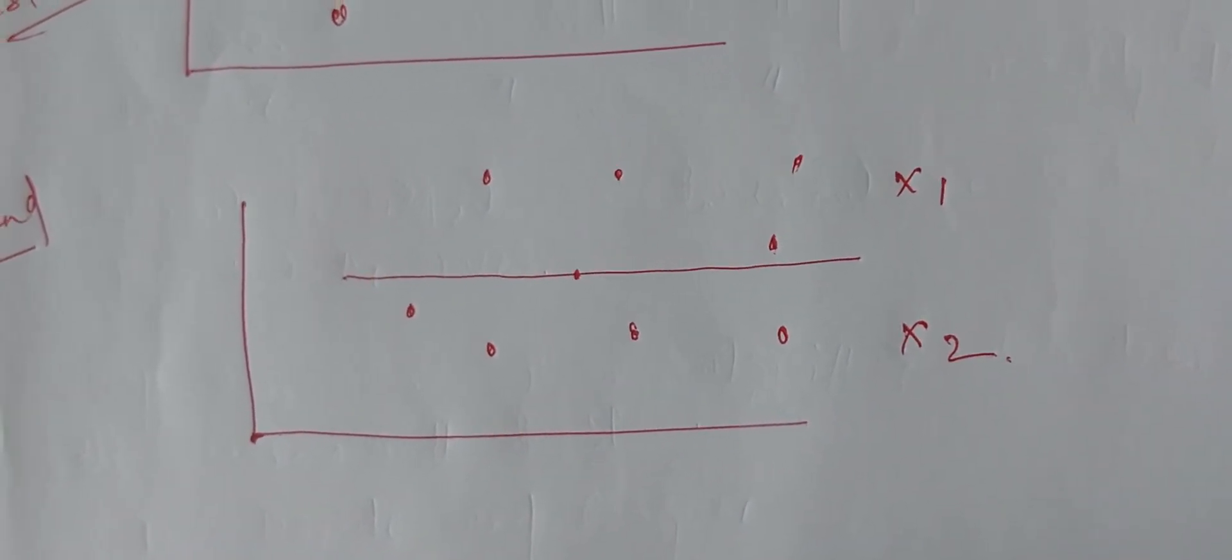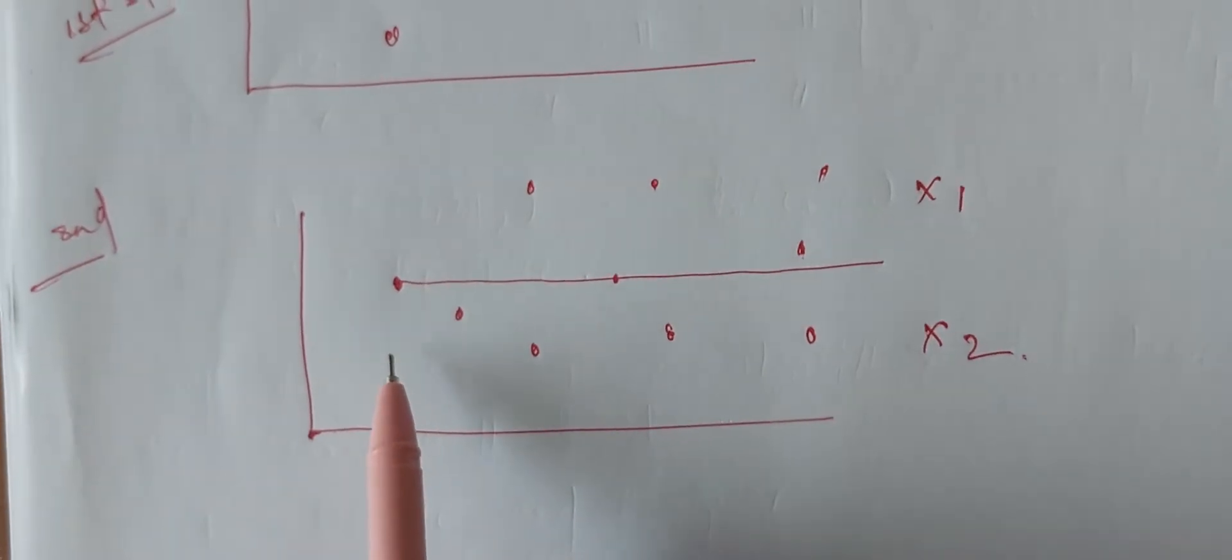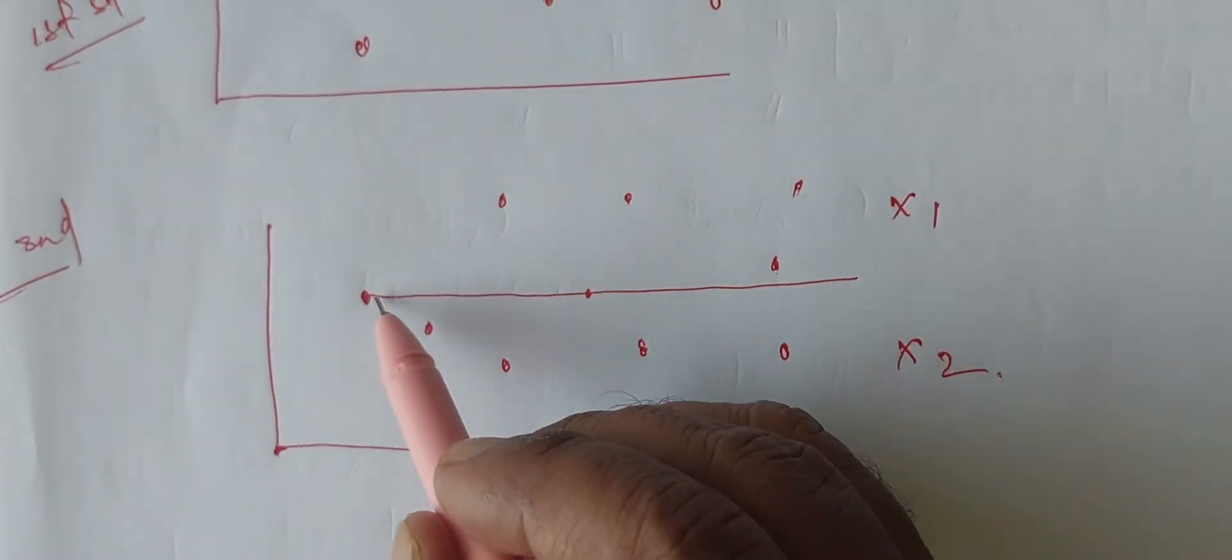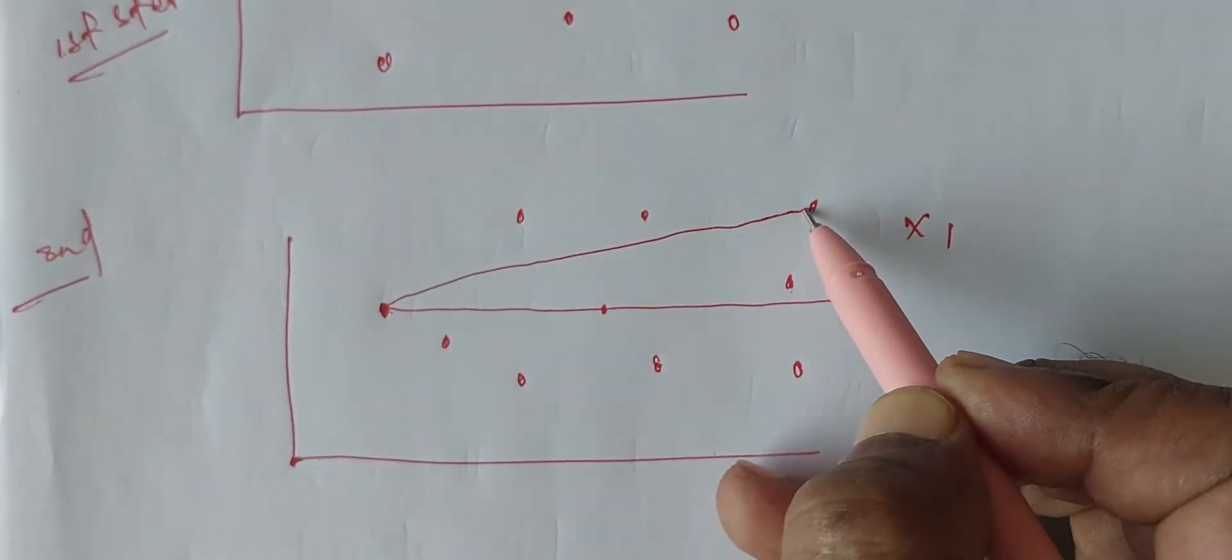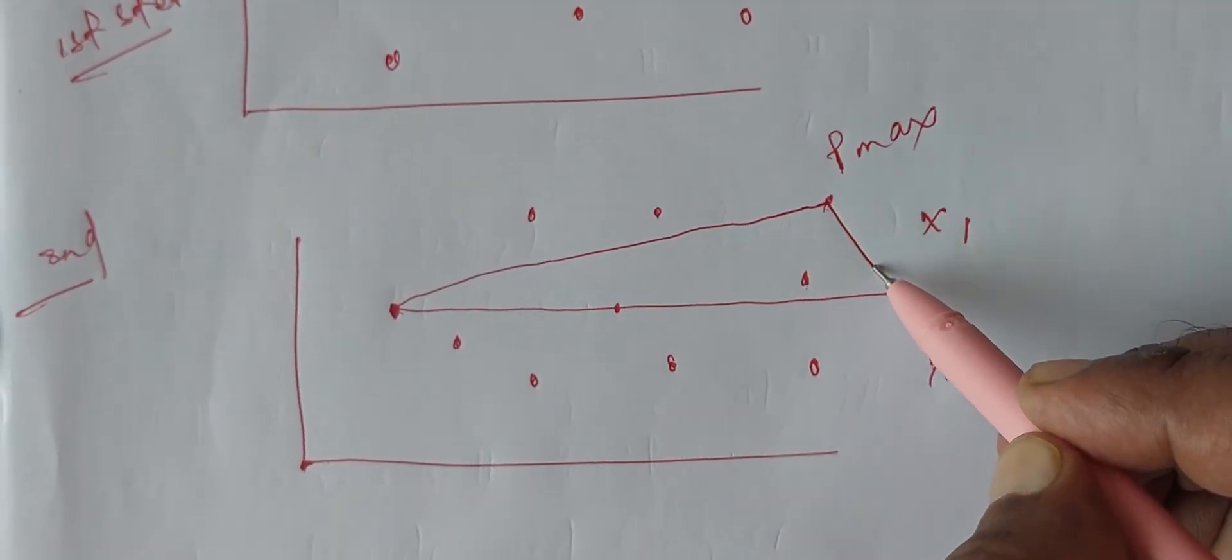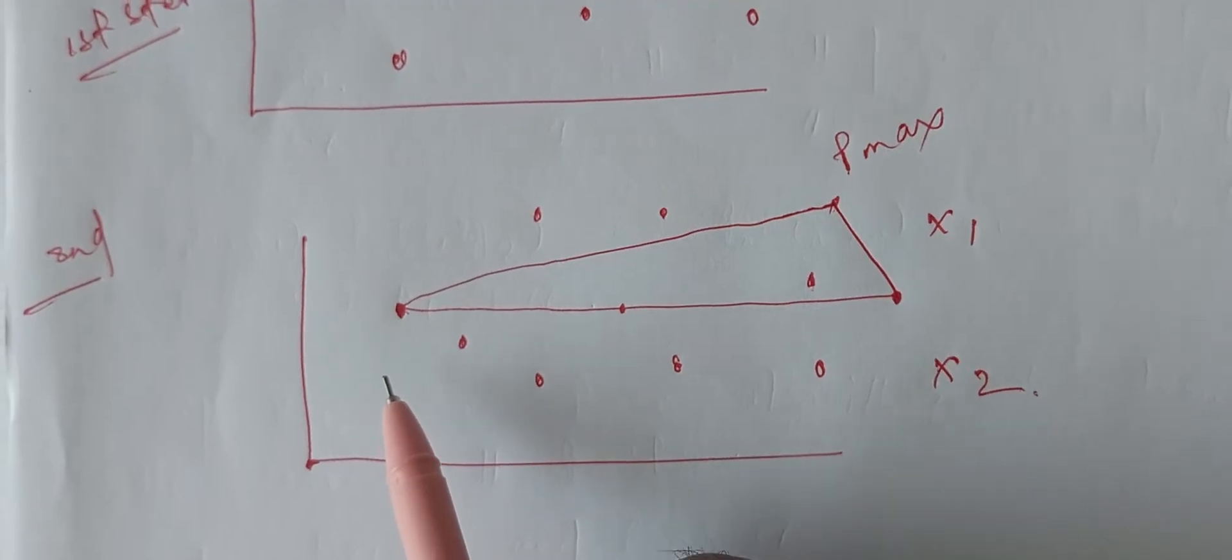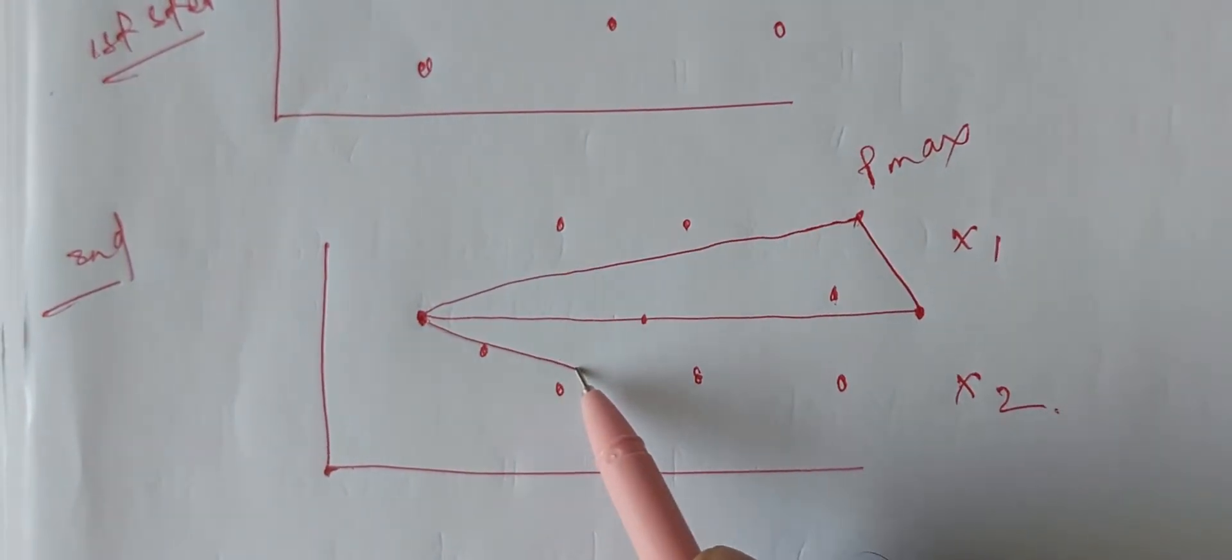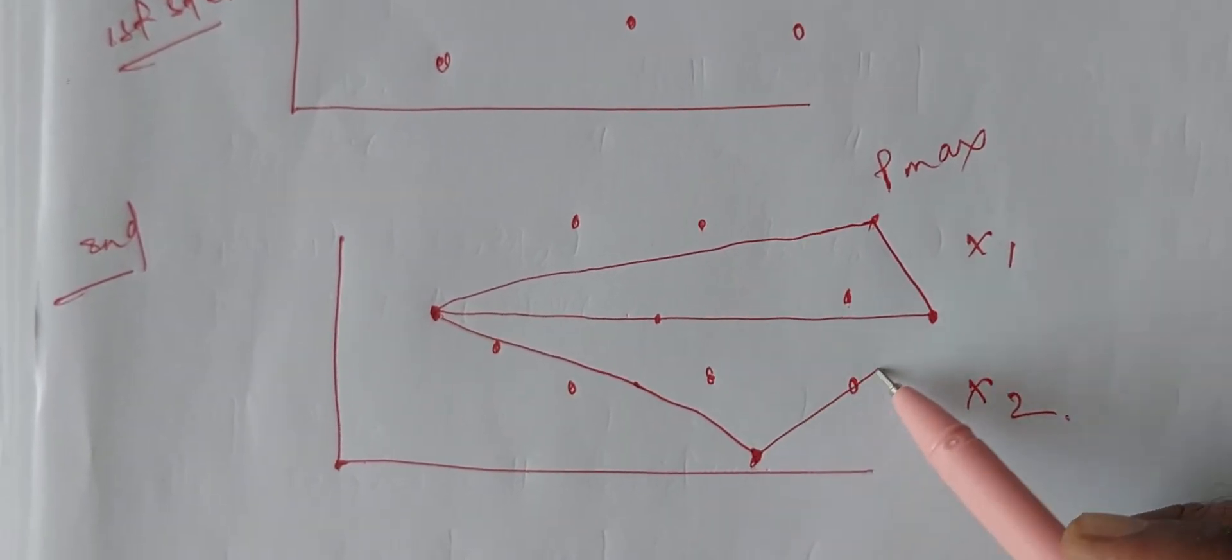By dividing it from here, we will calculate which is containing the largest distance from this point so that we will connect to there, calculating that it is Pmax. Similarly, we will connect to this end also. Again, from here we will calculate which is the largest distance. Suppose this is Pmax.